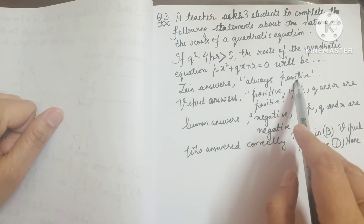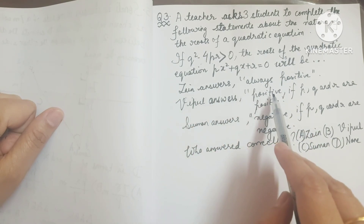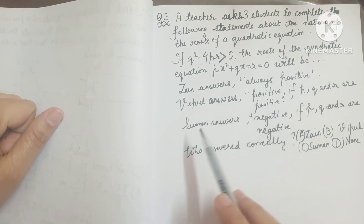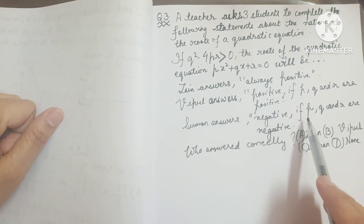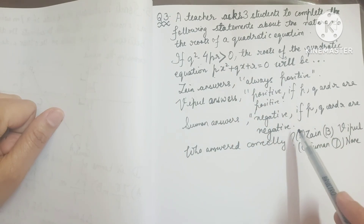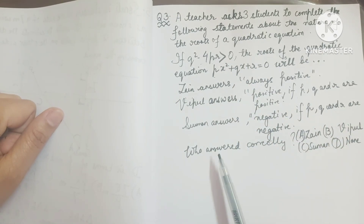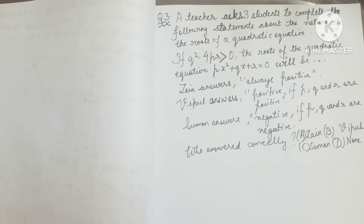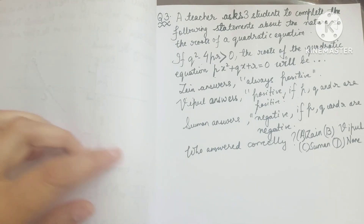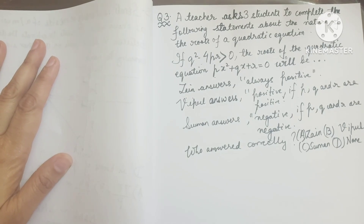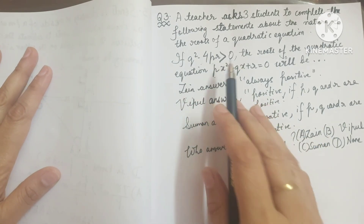Zain answers 'always positive.' Whipple answers 'positive if the numerical coefficients p, q and r are positive.' Suman answers 'negative if the numerical coefficients p, q and r are negative.' The question is: who answered correctly? Options are A: Zain, B: Whipple, C: Suman, D: none. To answer this, we go back to the basics of quadratic equations.